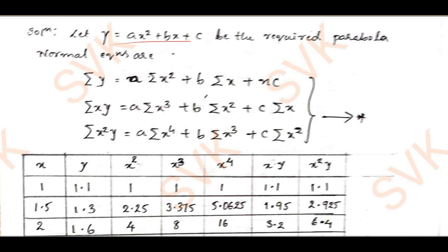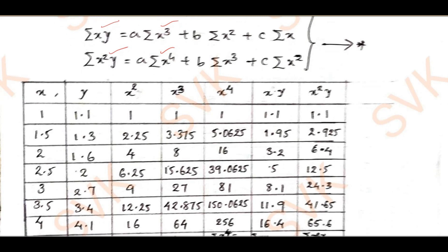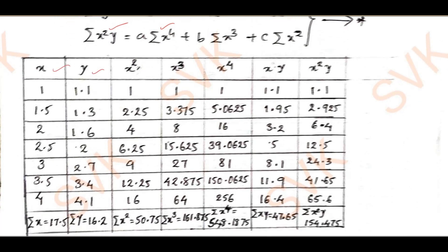From the normal equations, we need to calculate the following from the data: summation y, summation x, summation x², summation x³, summation x⁴, summation xy, and summation x²y. Once we have all these values, we can find a, b, and c, and substitute them into the standard parabola equation to get the required result.